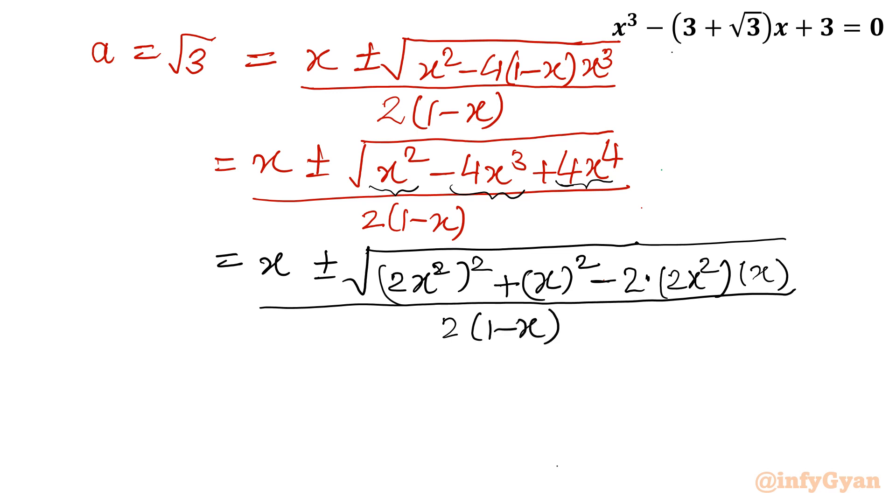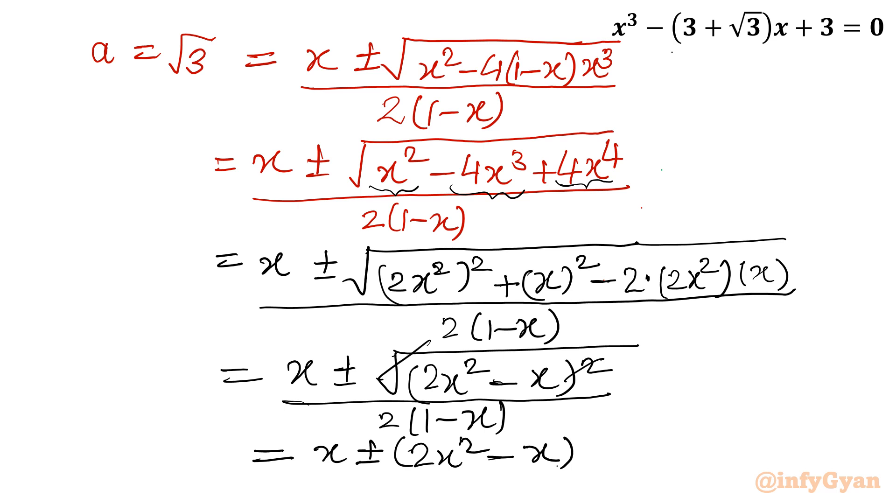That formula is a² + b² - 2ab, that means it is (a - b)² where a is 2x² and b is x, divided by 2(1-x). So let me write this expression as x ± (2x² - x) / 2(1-x).